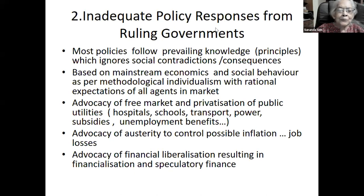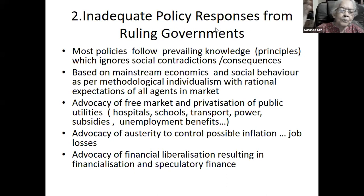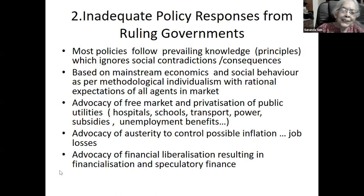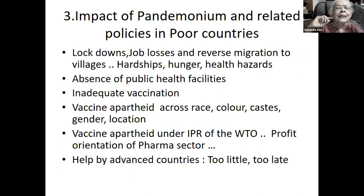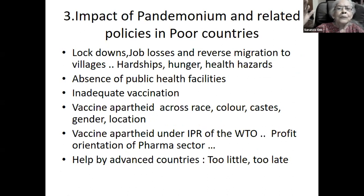Then came the colossal impact of the pandemic. COVID hit suddenly, from nowhere, in March 2020, and nobody knew how to tackle it. Scientists have since brought some solutions through vaccines, but what kind of policies were followed especially in the Global South and poor countries? Lockdowns — so that people don't move around — led to job losses and so many people uprooted from their dwellings and jobs, with reverse migration to villages with no prospects.